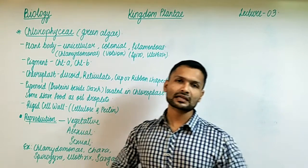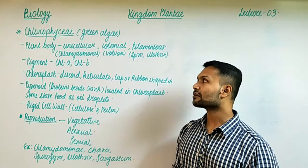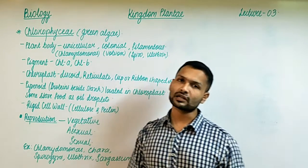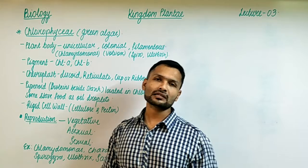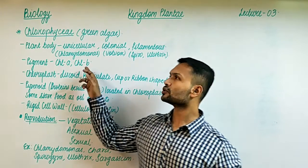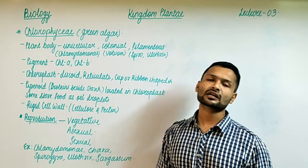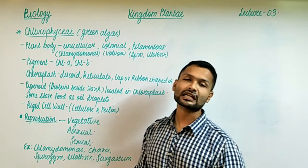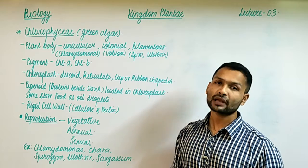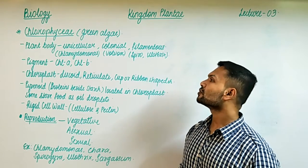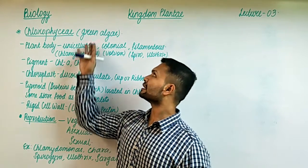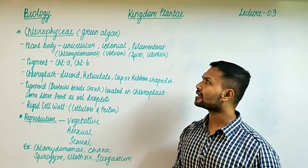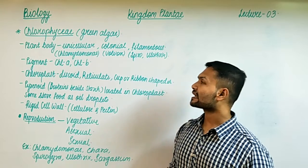Chlorophyceae has the chlorophyll pigments, predominantly chlorophyll A and chlorophyll B. Chlorophyll A is greenish yellow and chlorophyll B is bluish green. Both are greenish in colour, which gives green colour to this algae. Based on the pigment - both chlorophyll A and B being greenish in colour - hence we call them green algae.